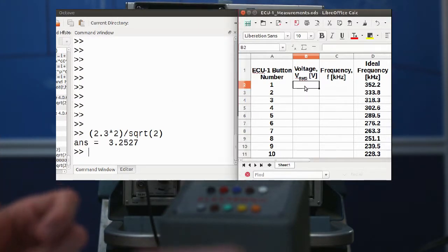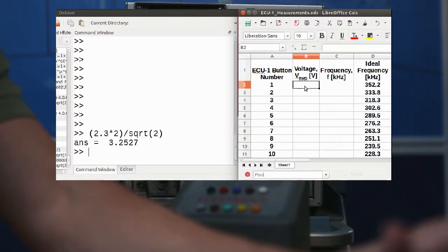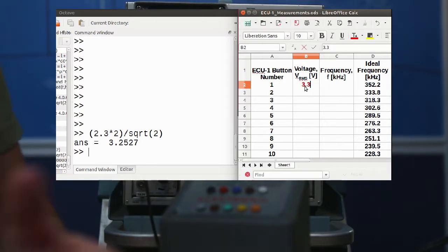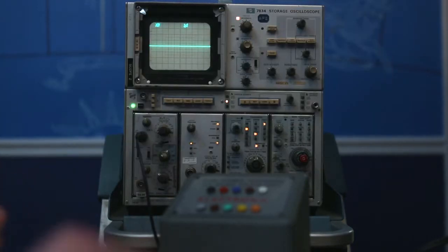The repair manual says it should be around 3 volts. I think actually it says button 7 should be around 3 volts, and we'll see what button 7 says later. But 3.3 volts, that's good enough for me. Let's move on to the wavelength so we can figure out the frequency of this channel.